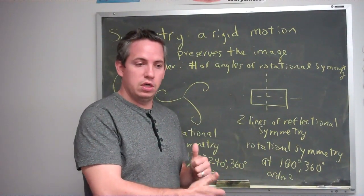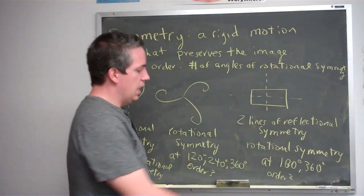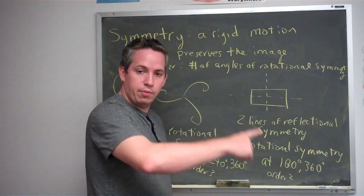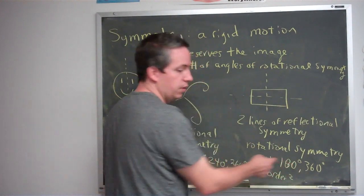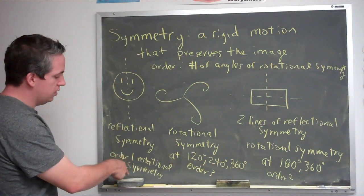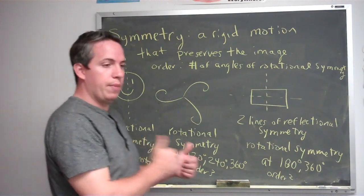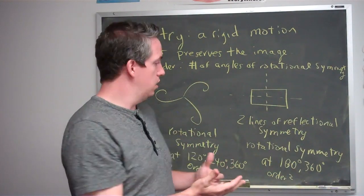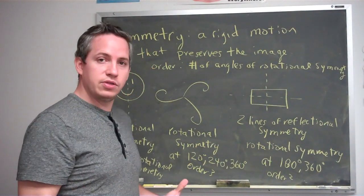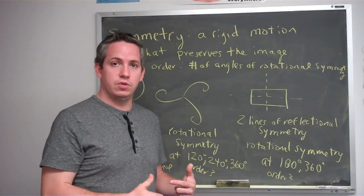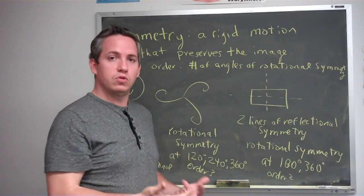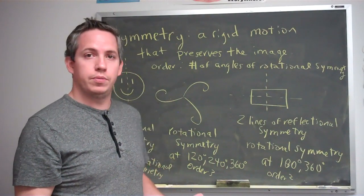You can go back and forth between order and angles: if it's order 2, take 360 divided by 2 to get 180 degrees as the first angle. If it's order 3, 360 divided by 3 gives 120 degrees. If it's order 1, 360 divided by 1 gives 360 degrees. So I can convert between the order and the rotational symmetry angles simply by dividing 360 by whatever the order is. When we talk about symmetry, we look for any possible lines of reflectional symmetry and any possible angles of rotational symmetry — and once we figure out those two things, we know the full symmetry of a particular image.